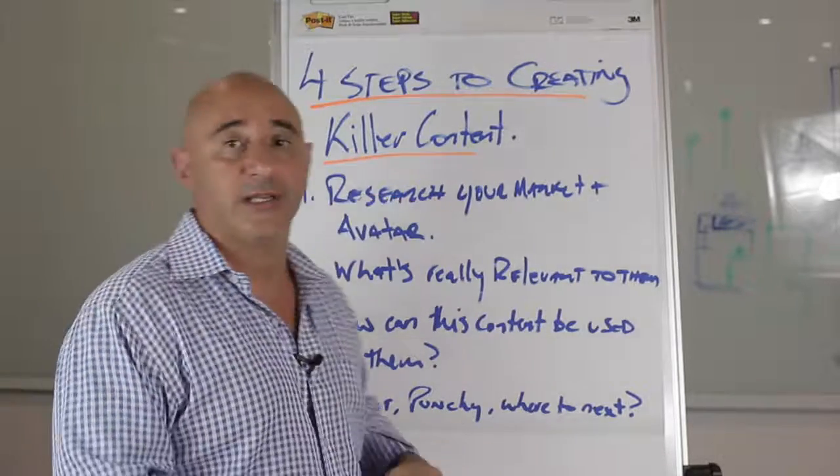The last step: content needs to be short, punchy, and include a 'where to next.' There's no use writing an 18-page or 65-page download — it's too long. People lose interest because today we have a shiny-object syndrome. People just want really short, punchy content.